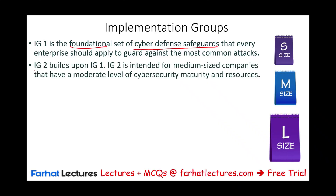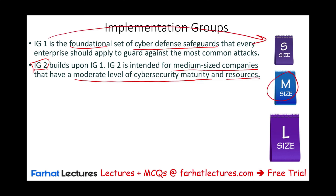Then we have IG2, which builds on IG1. So everything that applies to IG1 will also apply to IG2 — IG2 is IG1 plus IG2 controls. IG2 is intended for medium-sized companies that have a moderate level of cybersecurity maturity and resources. Medium-sized companies have a bit more resources and cybersecurity maturity; they're exposed to more risk because they have more data and more sensitive information.